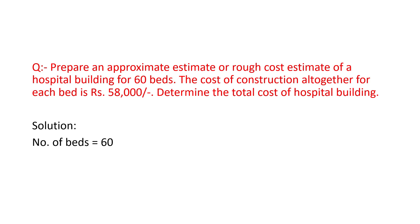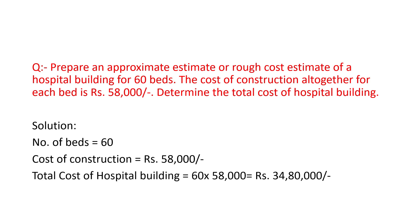The data we have: number of beds = 60, and cost of construction = 58,000 per bed. If we multiply these two values — 60 and 58,000 — we get the total cost of construction. Total cost of hospital building = 60 × 58,000 = 34,80,000.